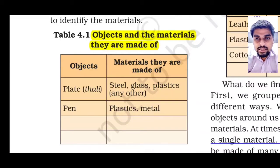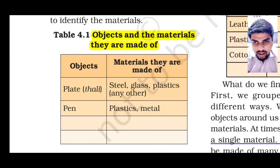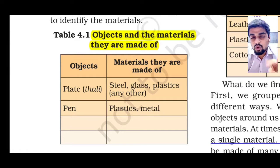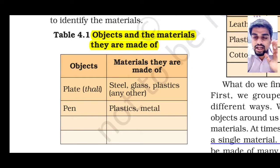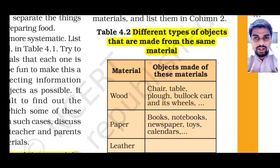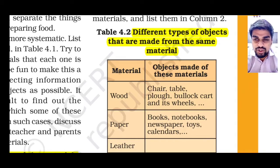Next is activity 1 and activity 2, in which you have to make two tables which we have already done and discussed in our previous videos. We have seen two columns: the first column is of objects and the other column is of materials from which that object is made up of. And in the second table, table number 4.2, we have discussed a list of materials and the objects that can be made from those materials.